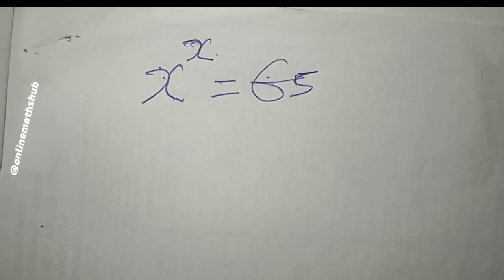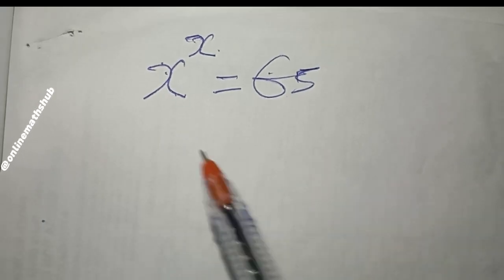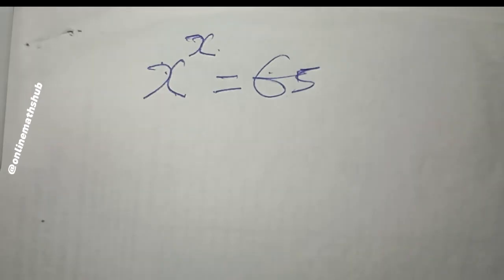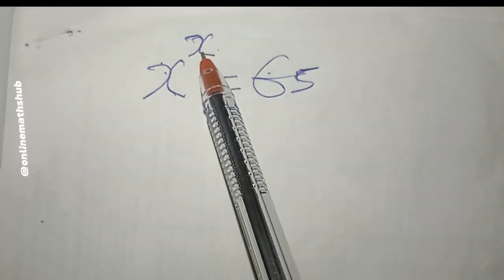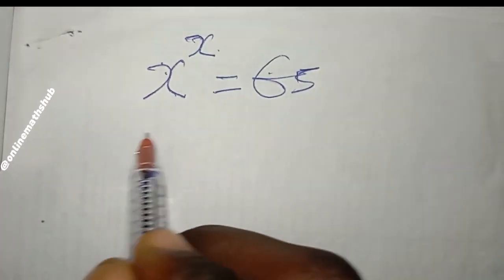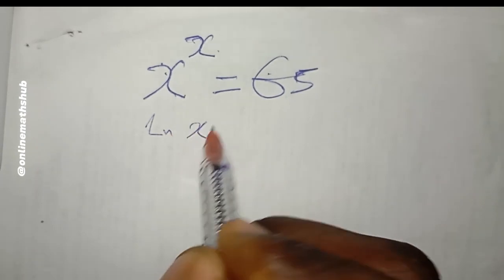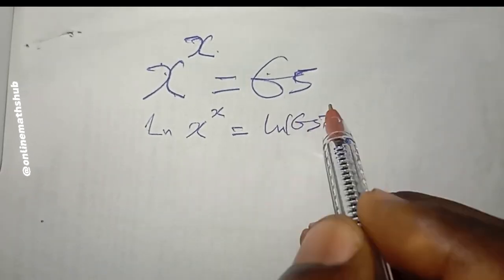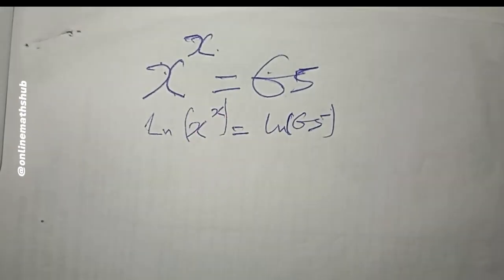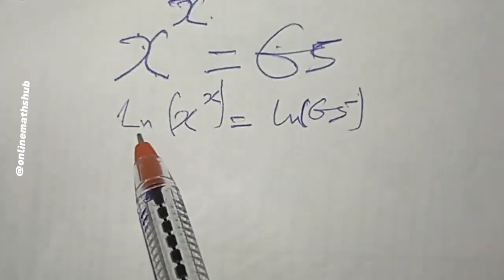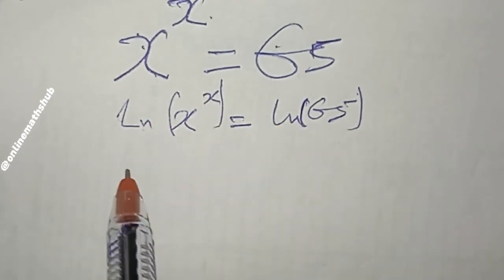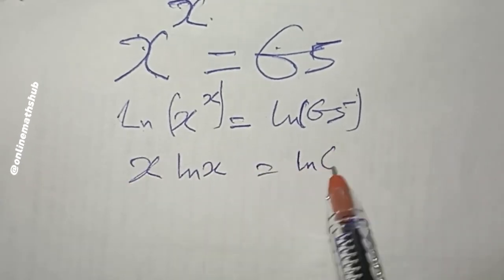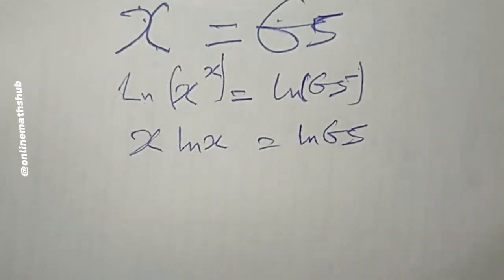Looking at this equation, the most basic thing to do is to take the natural log of both sides so that I can bring down this x. So I have: natural log of x^x equals natural log of 65. Then, using the properties of natural log, I bring down the x, giving me: x · ln(x) = ln(65).